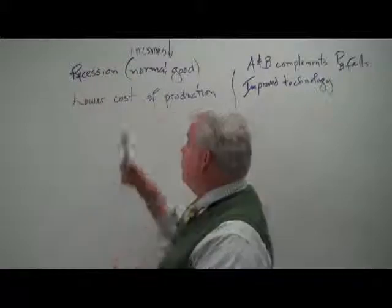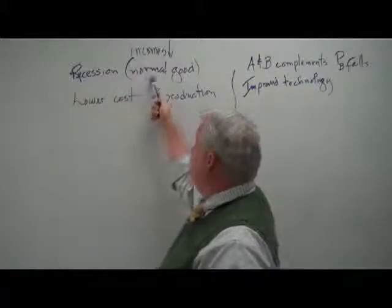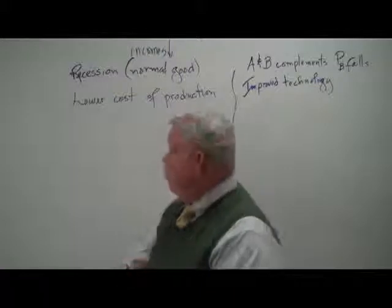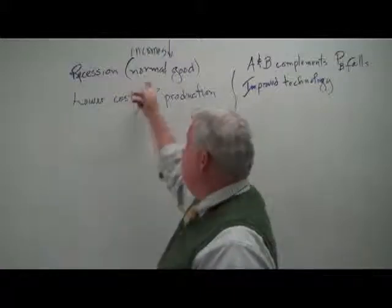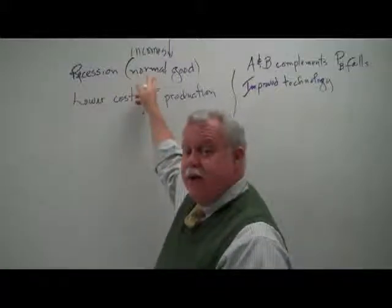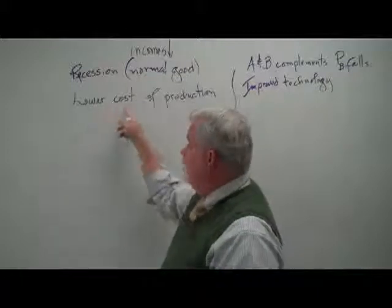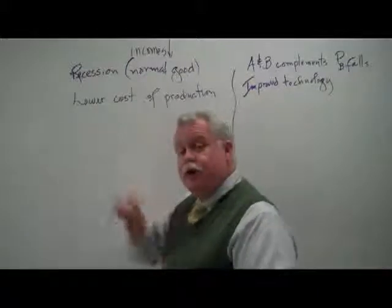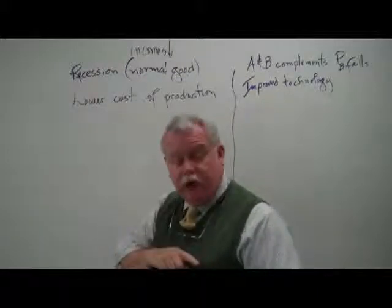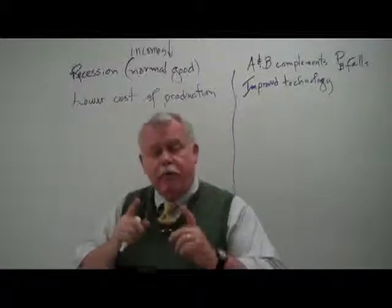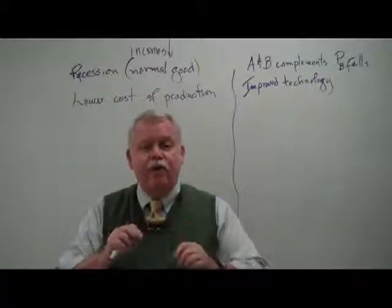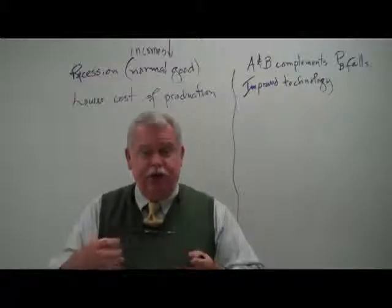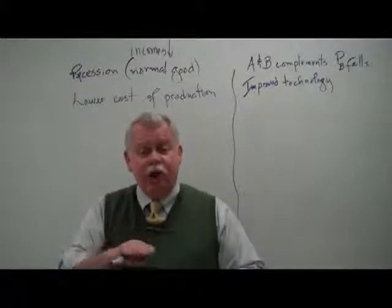In this example, the recession decreases incomes and we're talking about a normal good. So the first thing that's going to happen is there's going to be a decrease in demand. We also see that lower cost of production is going to increase supply. Now you've got both curves moving. When you have both curves moving, I suggest you work through this with the graphs.